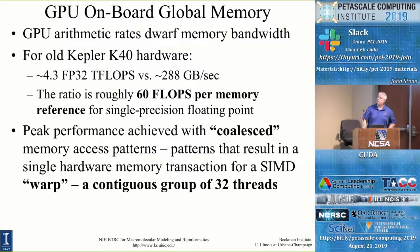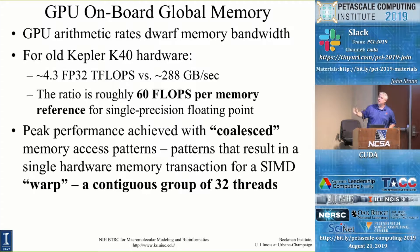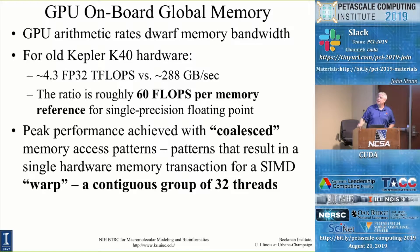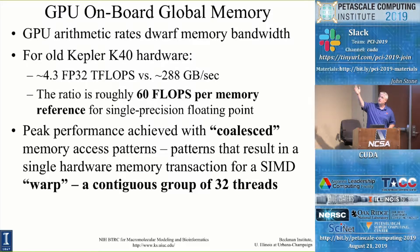For the old Kepler K40 hardware, we were able to do about 4.3 teraflops of single precision arithmetic, and that was on hardware that only had about 288 gigabytes per second of memory bandwidth. That's about 60 floating point operations per memory reference. If you were just going through a very large array in memory, that tells you there's a 60-to-1 ratio of flops to memory bandwidth. So you need to find some way to reuse your operands. If you're not able to reuse them or put them in a fast memory location, you're going to be bound not by the 4.3 teraflops but by the 288 gigabyte per second memory bandwidth limit.